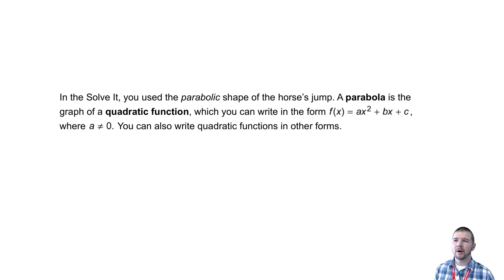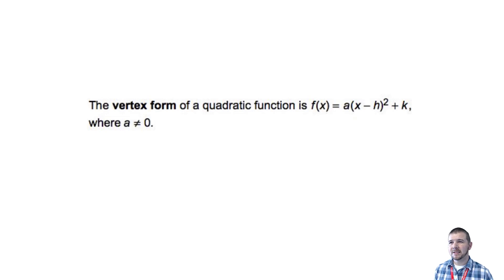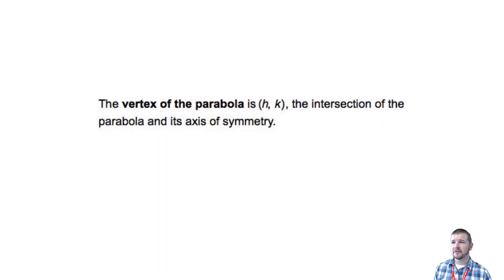You can also write quadratic functions in other forms. The vertex form of a quadratic function is f of x equals a times the quantity x minus h squared plus k. The axis of symmetry is a line that divides the graph of the function — a parabola — into two mirror images. The equation of the axis of symmetry is x equals h. The vertex of the parabola is the point h comma k, the intersection of the parabola and its axis of symmetry.